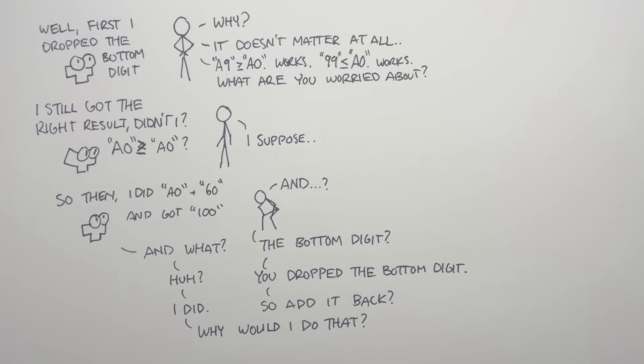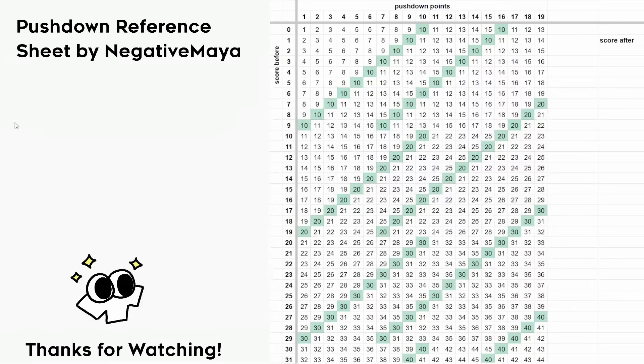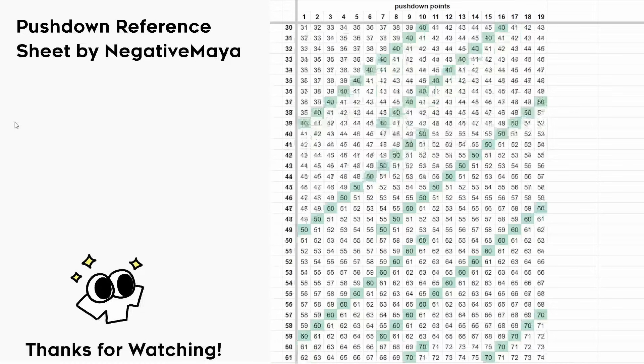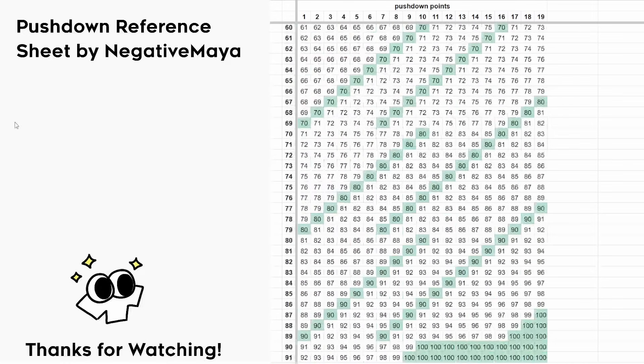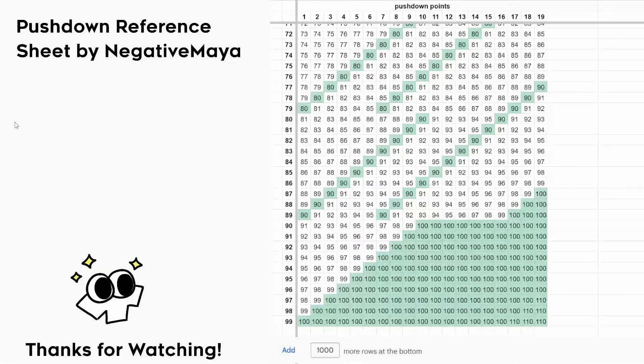And that pretty much concludes the explanation. Here's a table of every score and push down result. You don't really need to know this table. There's only two rules. If you cross a multiple of 10 by more than six, you lose the six points. If you cross a multiple of 100, you lose anything in the ones digit.